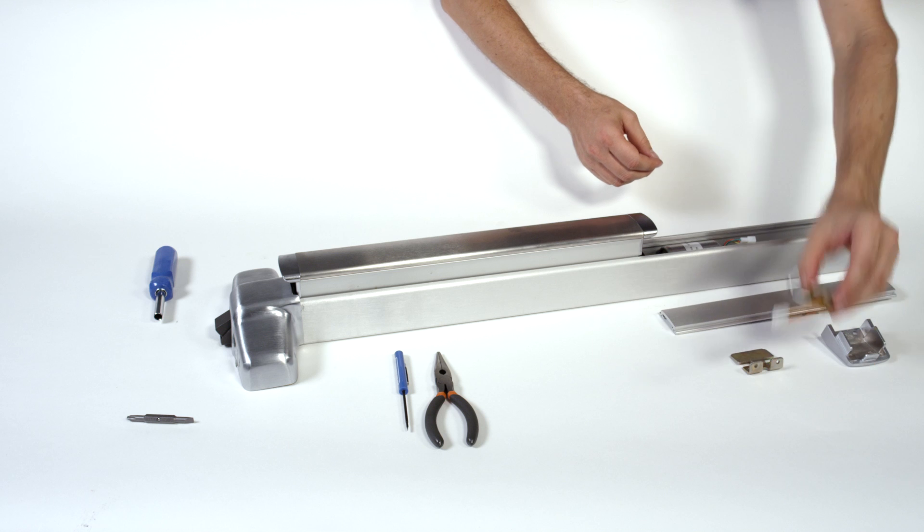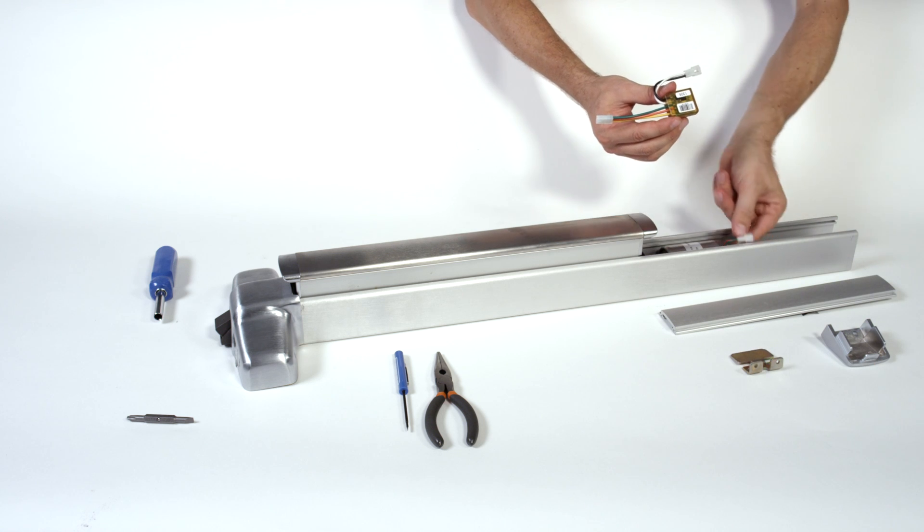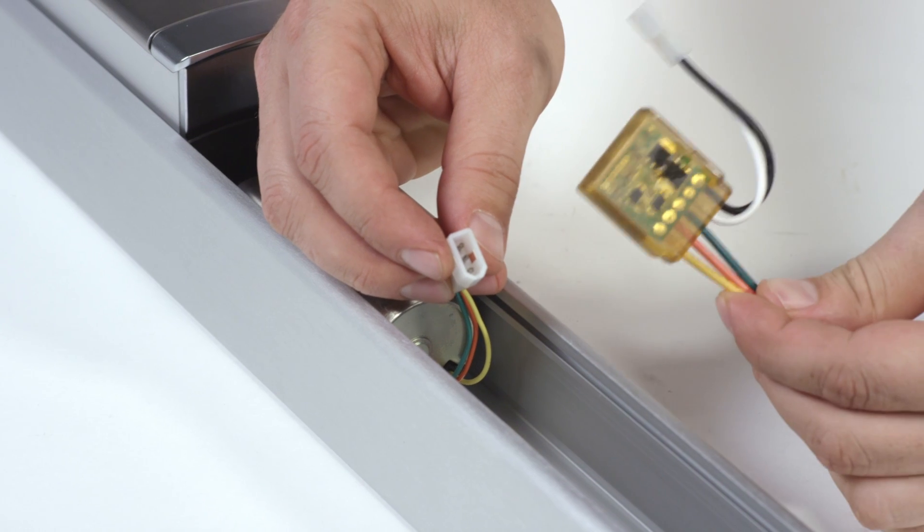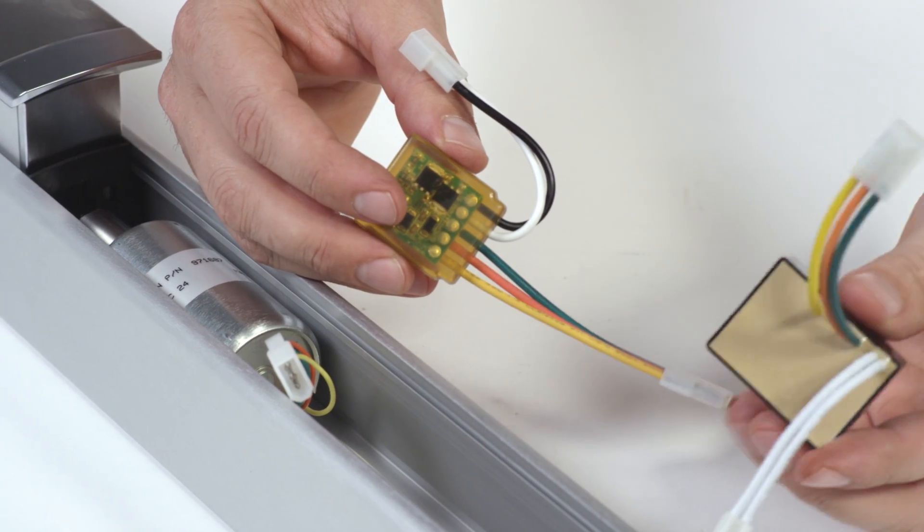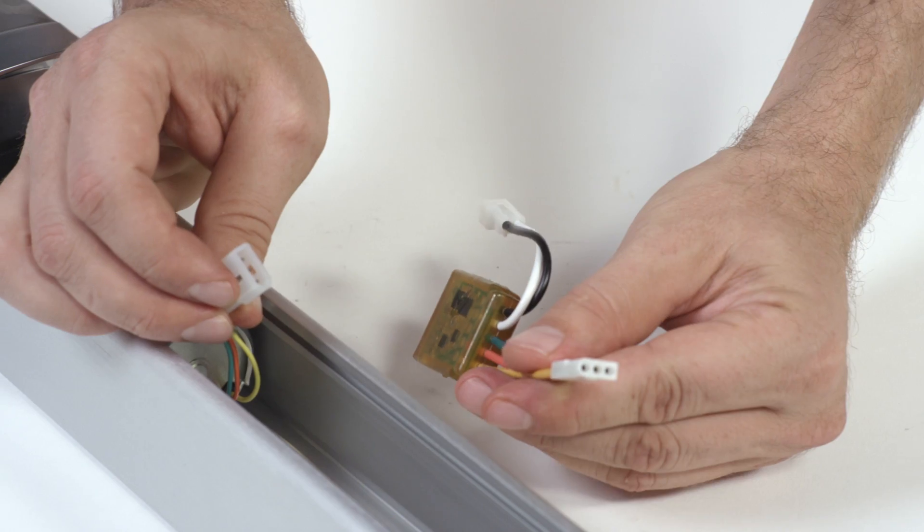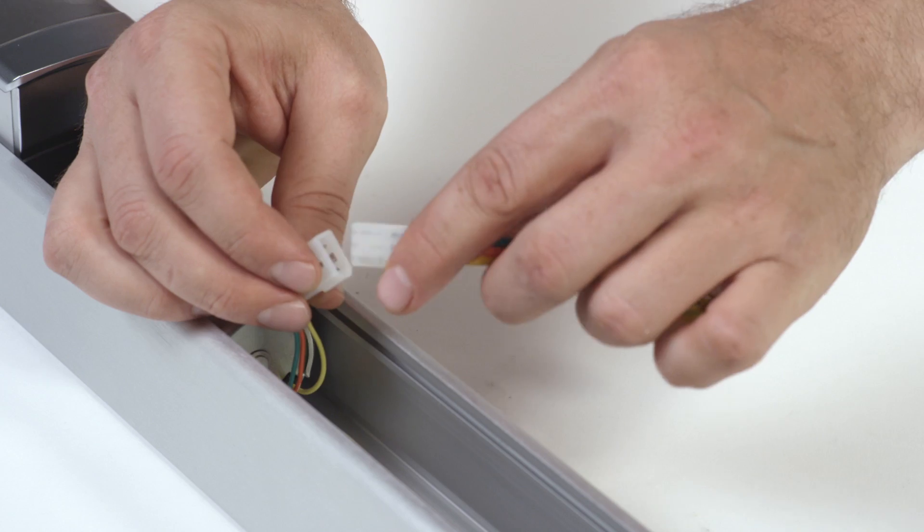Wires coming out of the solenoid have a quick release connector to simplify the attachment of the potted module. You can see the old version of this right here. Connect the potted module and push it inside the case.